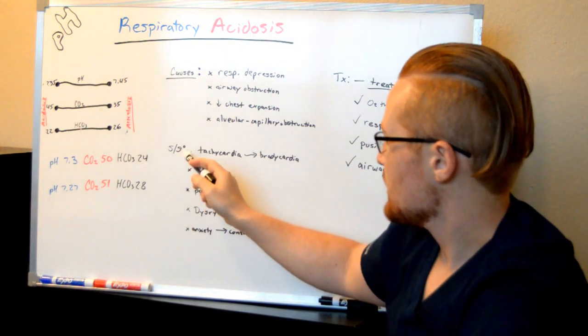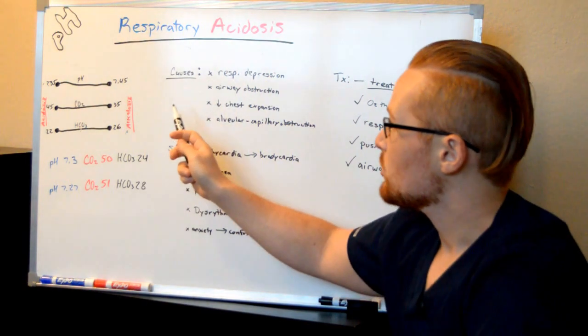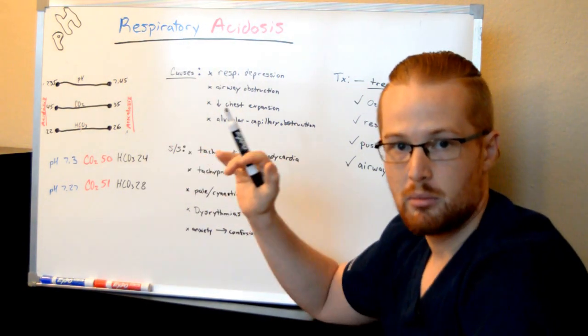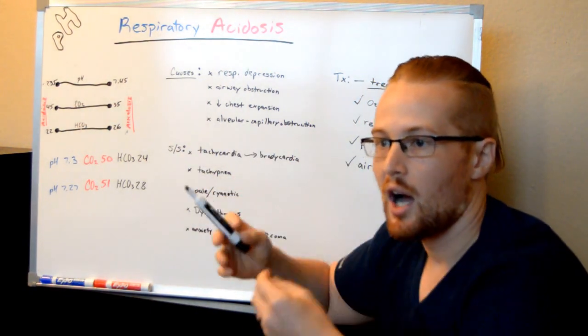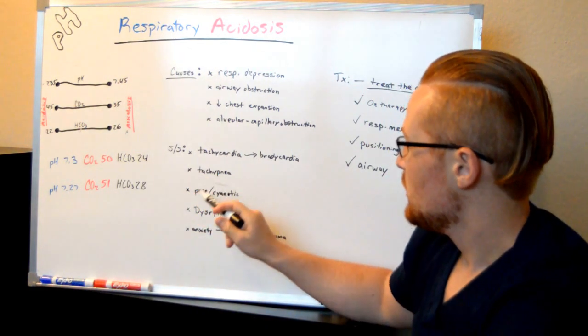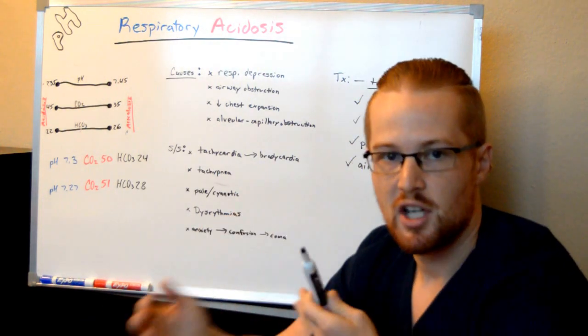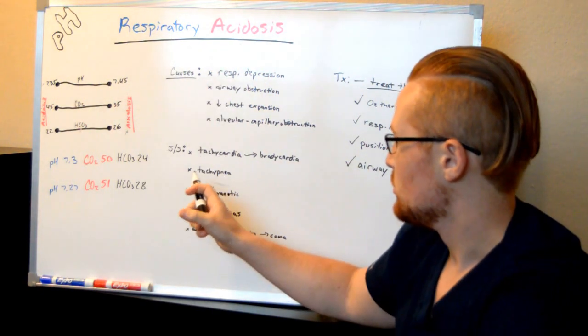So some signs and symptoms. One I want to point out, the cause of this acidosis is the patient's not getting adequate breathing. But that doesn't necessarily mean that they're not having a high respiratory rate. They could be in tachypnea, which is a respiratory rate up in the 30s or 40s, but nothing is exchanging. There's no airway exchange. So there's still going to be an acidosis.